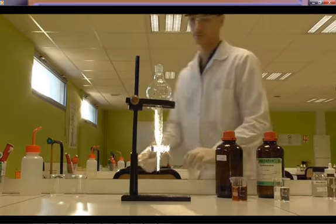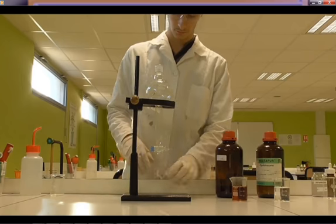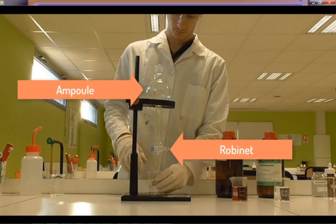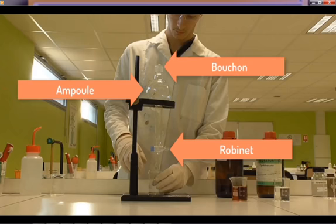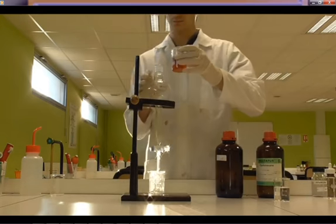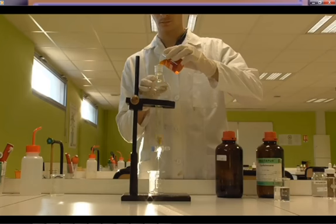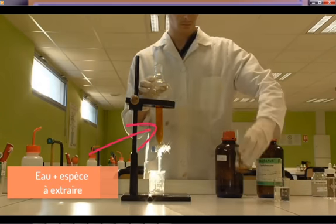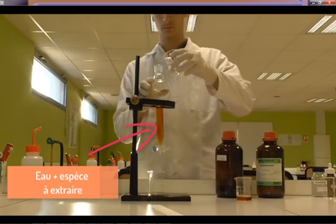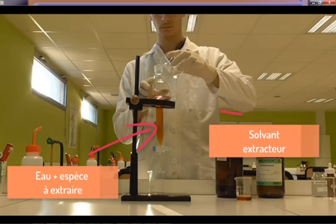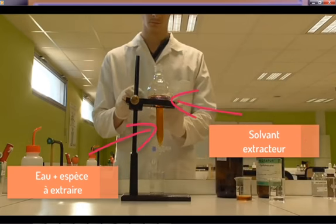C'est un instrument relativement cher qu'on manipule avec précaution. Elle est composée d'une ampoule, d'un robinet et d'un bouchon. La première étape consiste à introduire le premier solvant — celui qui contient l'espèce à extraire, ici l'eau — dans l'ampoule : on l'appelle le milieu aqueux. La deuxième étape consiste à introduire le solvant extracteur — ici un solvant organique — appelé milieu organique.